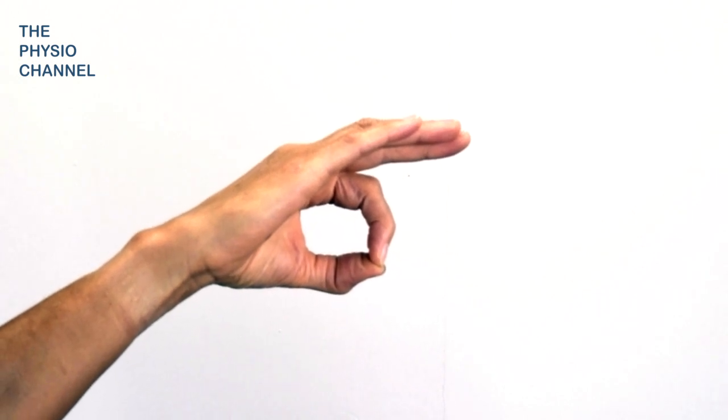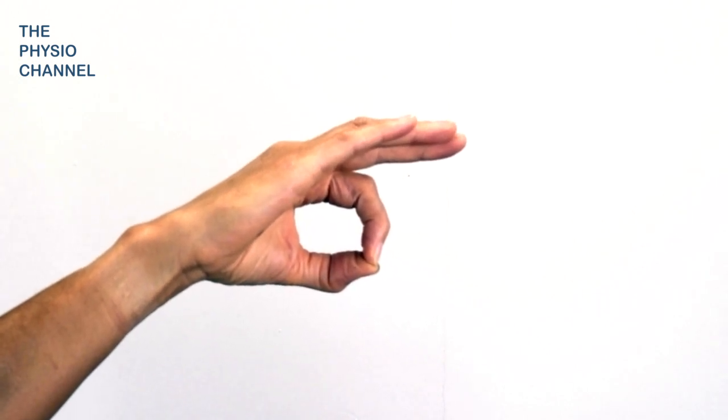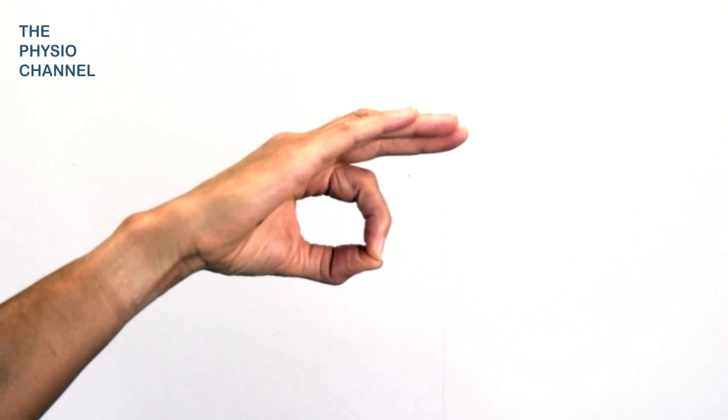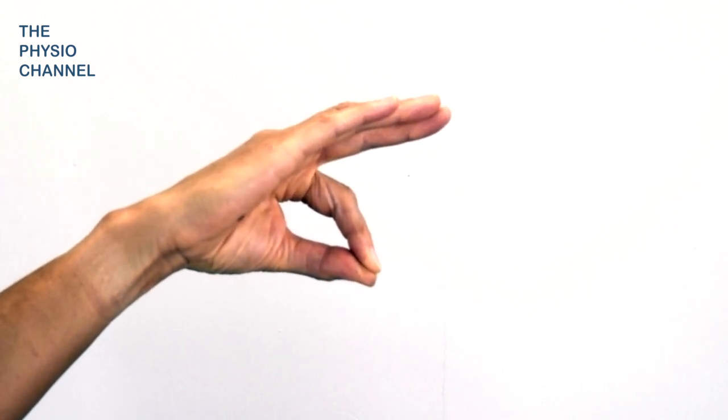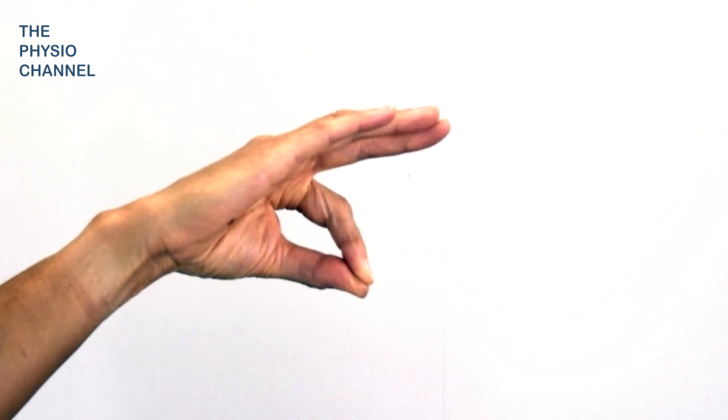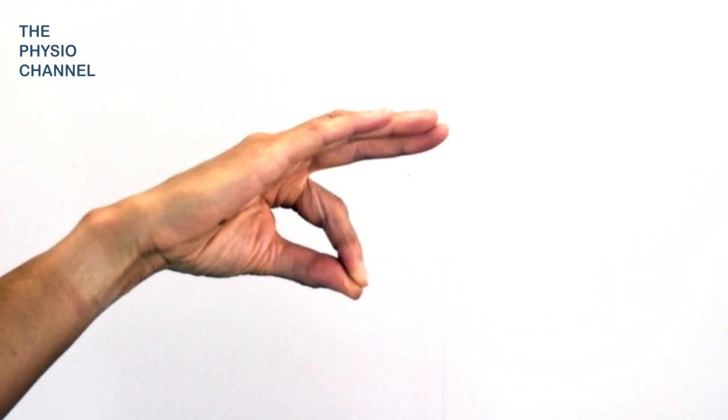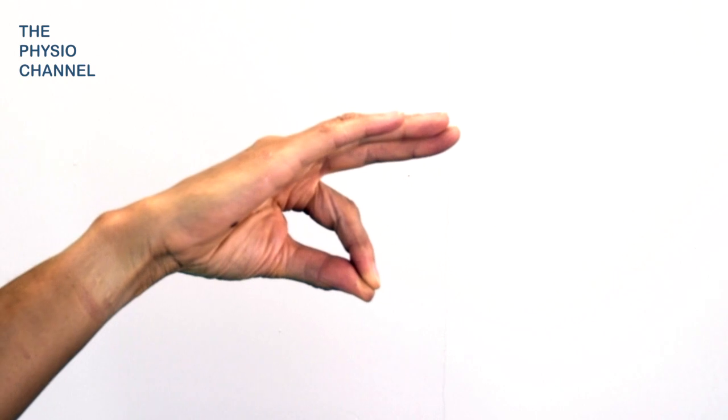A positive test is indicated by an inability to do this and instead the approximation of the finger pads will occur, as shown here. This will of course cause interphalangeal flexion as the finger pads approximate.